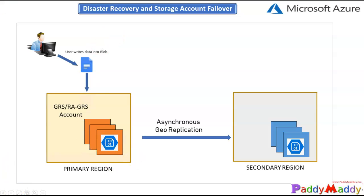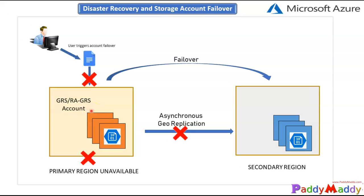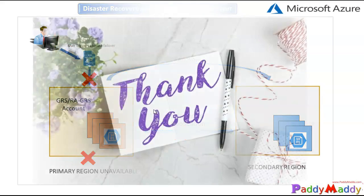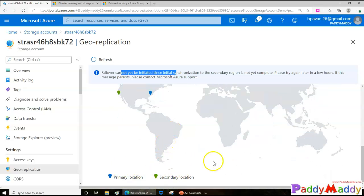To understand this conceptually: when a user writes data to a storage account, it goes into the primary region and three copies are made. All this information is then replicated asynchronously to the secondary region. If the primary region becomes completely unavailable, data cannot be written or reach the secondary region. To restore access, you need to perform a failover to the secondary location directly from the Azure portal.